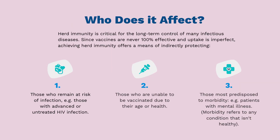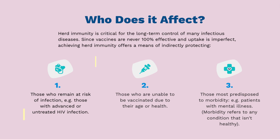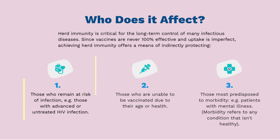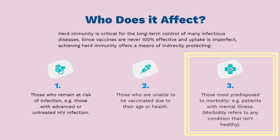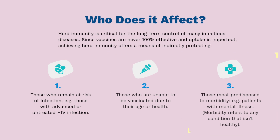Who does herd immunity affect? Herd immunity is critical for the long-term control of many infectious diseases. Since vaccines are never a hundred percent effective and uptake is imperfect, achieving herd immunity offers a means of indirectly protecting: first, those who remain at risk of infection, such as those with advanced or untreated HIV infection; secondly, those unable to be vaccinated due to their age or health; and lastly, those most predisposed to morbidity, such as patients with mental illness.